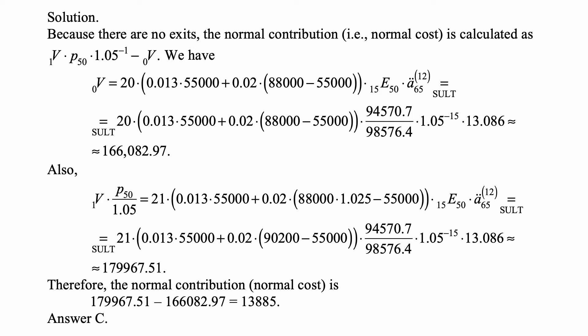We have the accrued liability at time 0 equal to 20 times 0.013 times 55,000 plus 0.02 times 88,000 minus 55,000 because of these two forms of accrual for salary below up to 55,000 and salary above 55,000.